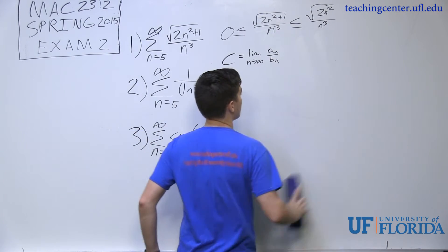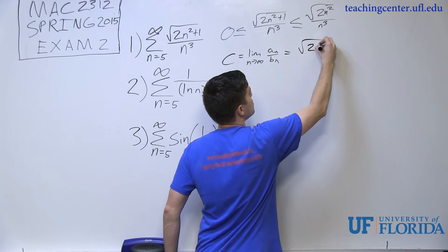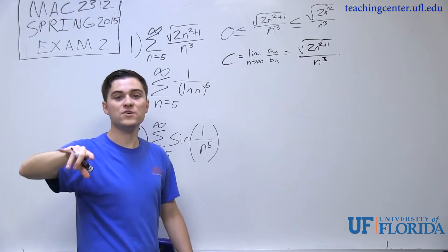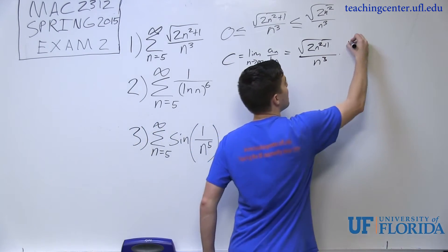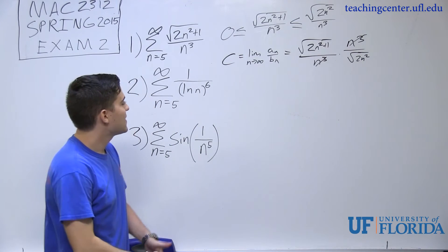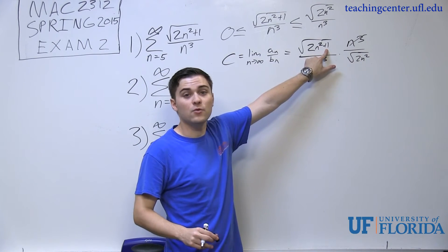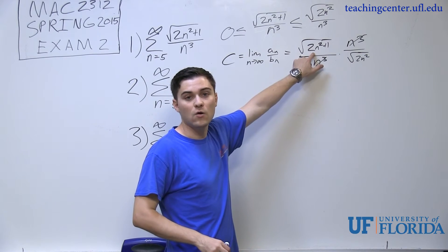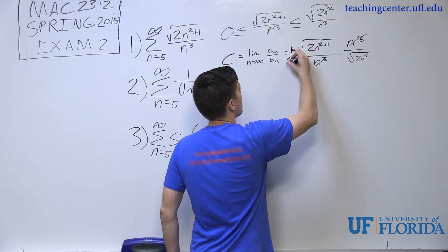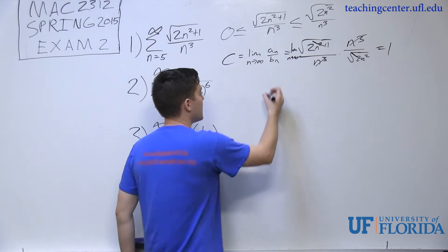Plugging in, I have √(2n² + 1)/n³ divided by √(2n²)/n³. I multiply by the reciprocal, those terms cancel, and taking the limit as n → ∞, both equal 1, so the constant terms don't affect anything. All I care about is the leading coefficient: √(2n²) and 2n² give a ratio of 1 as n → ∞.